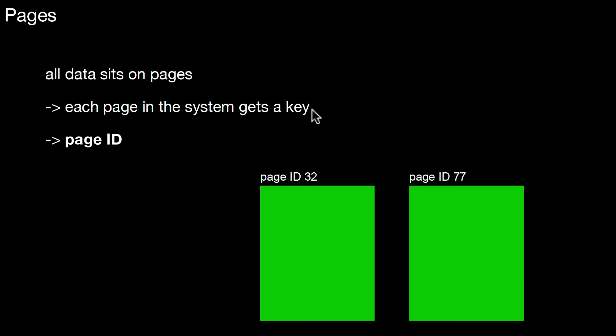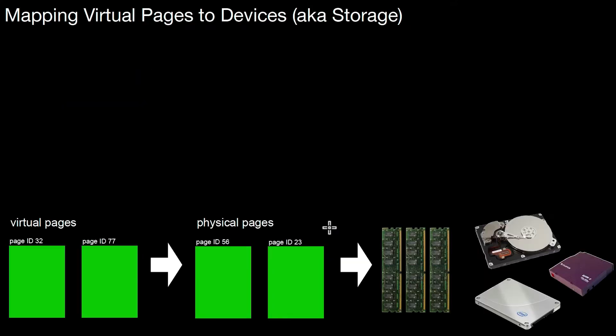In the previous videos, we learned about pages. All data sits on pages. Each page in the system gets a key that is a page ID, and whatever you do, eventually you put your data on such a page. Then the system will handle that. By system, I mean it's a mix of database system and the operating system.